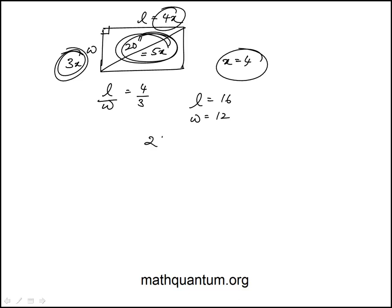They're asking for the perimeter, which is 2 times L plus W. 2 times 16 plus 12, that's 28 times 2. That's 56. Answer B.